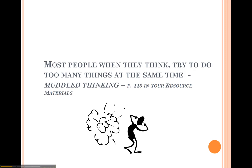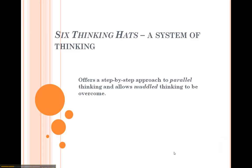One thing de Bono does say — and this is in the reading on page 113 — is that most people, when they think, try to do too many things at the same time, and he calls this muddled thinking. He's developed this strategy of the six thinking hats, which offers a step-by-step approach to what de Bono calls parallel thinking, allowing us to overcome our muddled thinking.